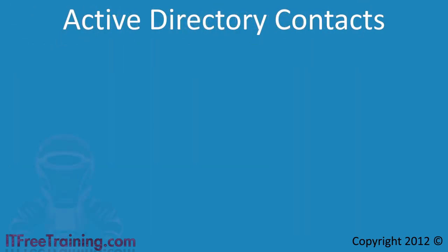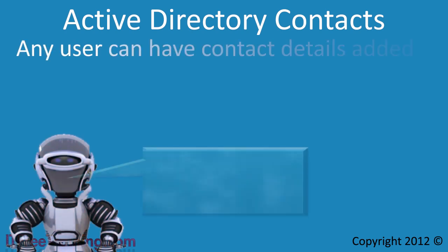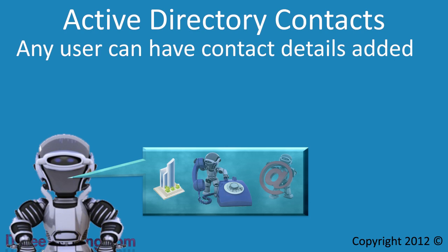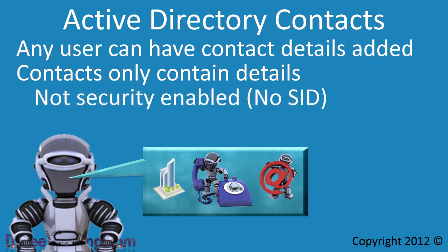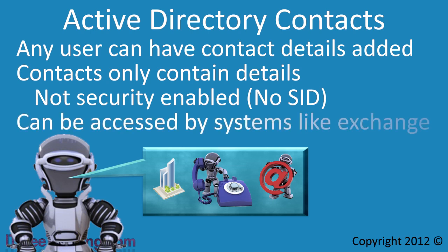In Active Directory, for any user that you create, you can add details about their address, phone number, and email information. This makes it easy for email software to read the information stored in Active Directory in order to retrieve information about users in your company. The difference between users and contacts is that contacts only contain details about the person. Contacts are not security enabled and thus do not have a SID. The advantage of having contact information stored in Active Directory is that other systems like email and Active Directory queries can access this information.